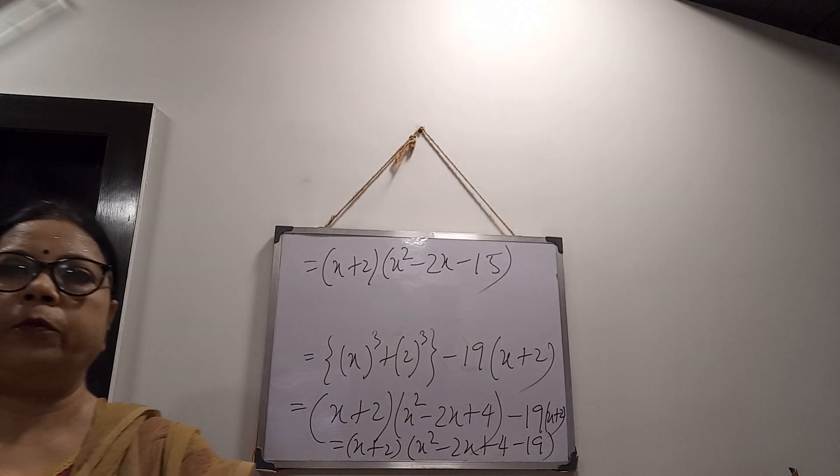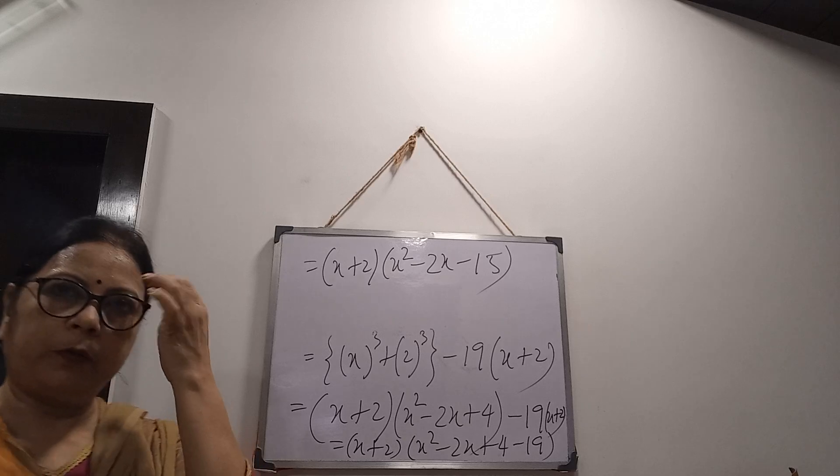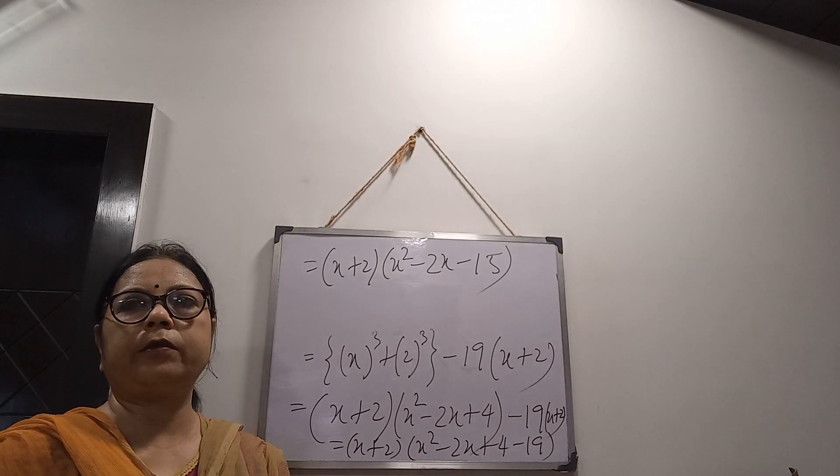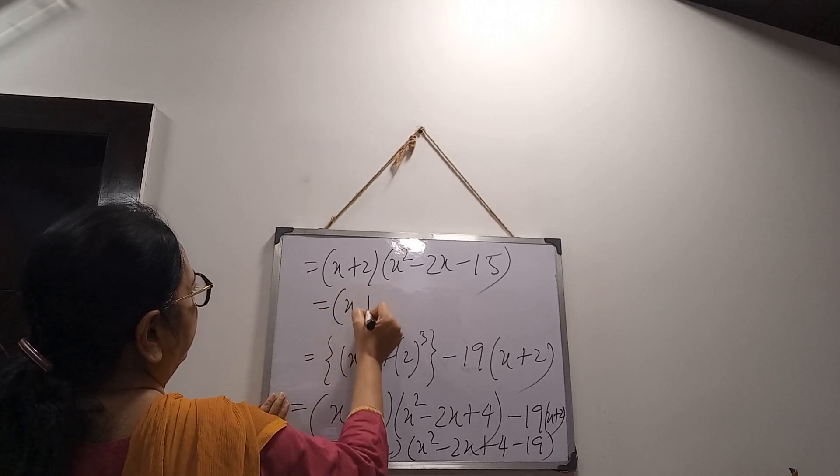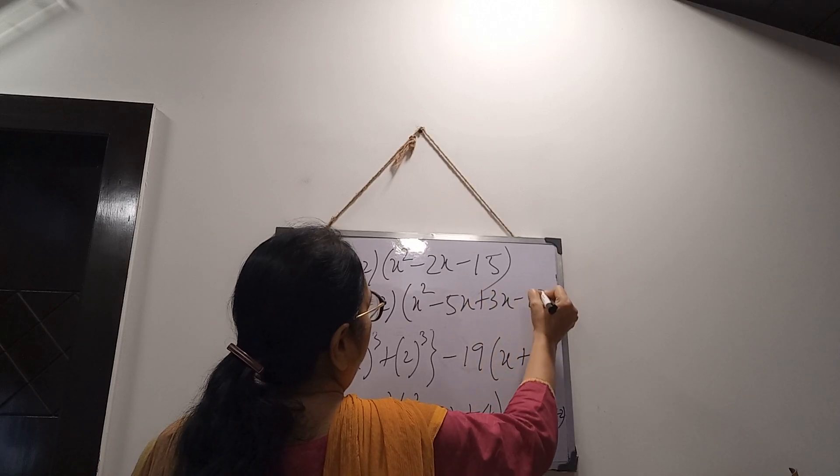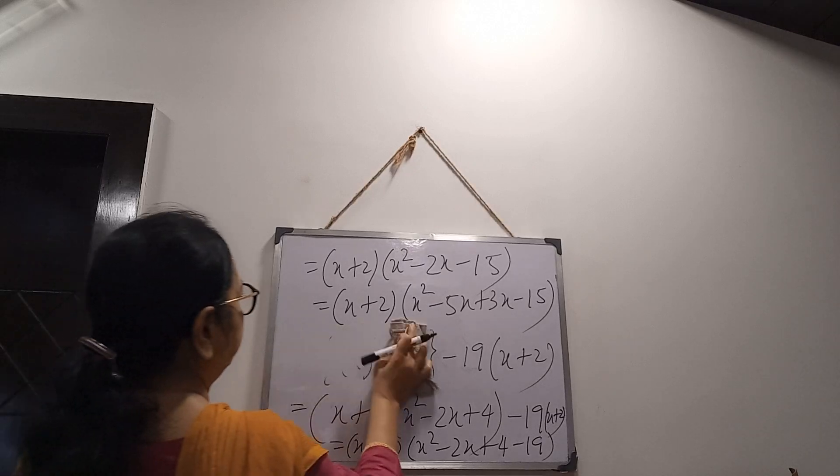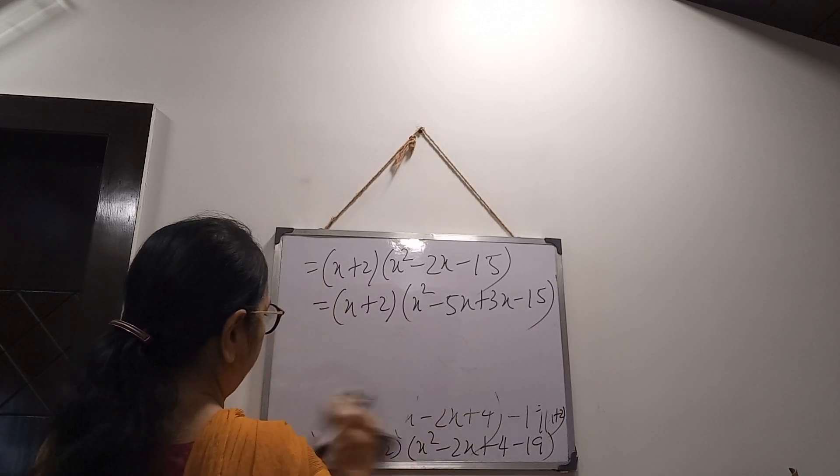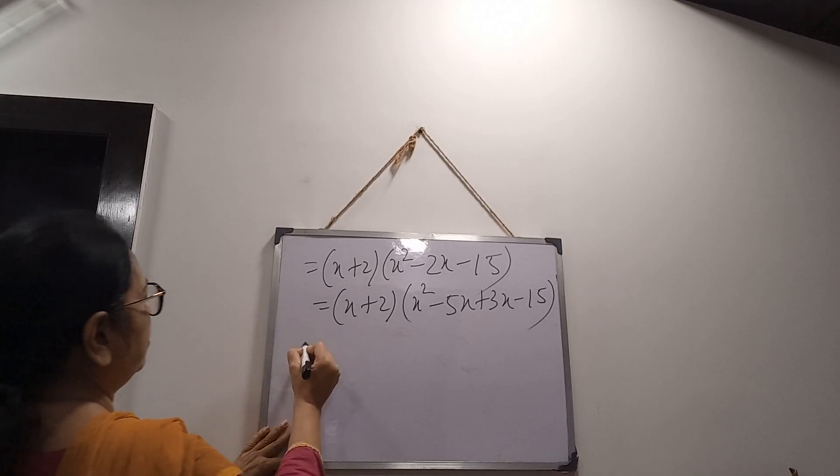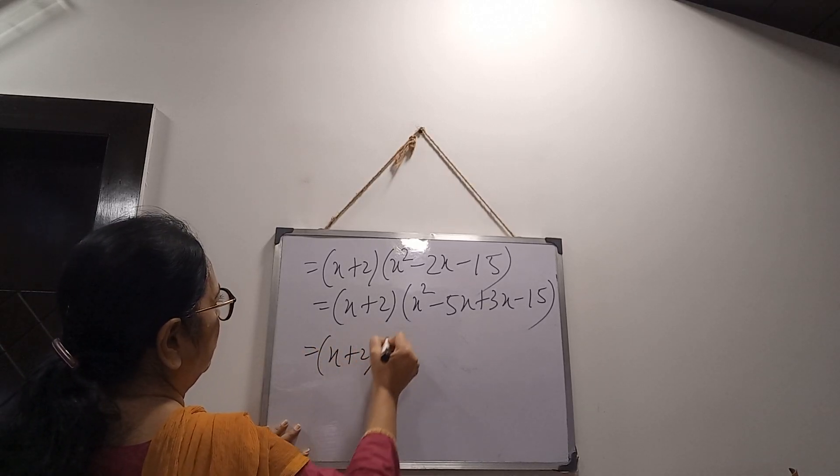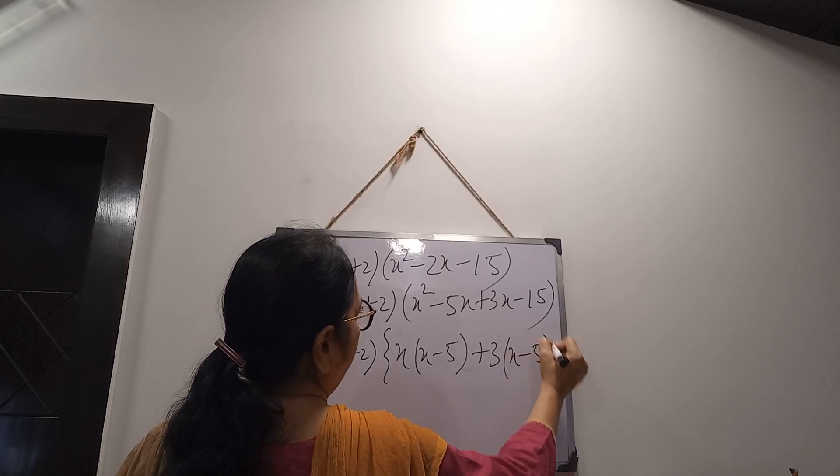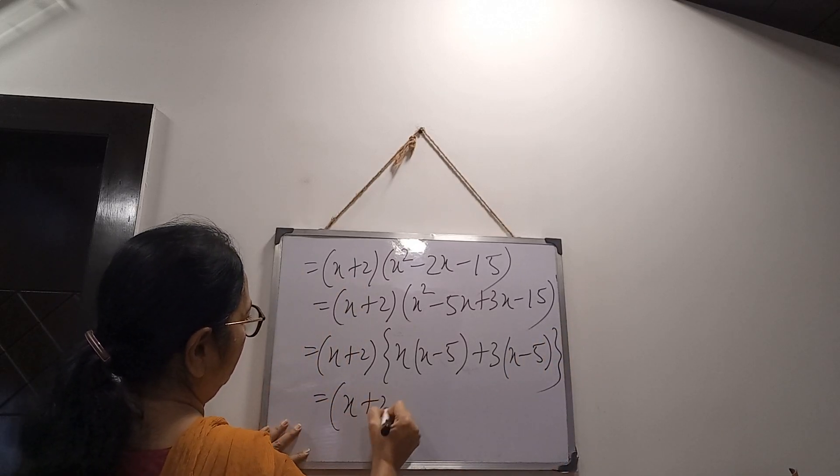What I have told you, that you have to check whether middle term is possible or not. There is 15, you have to bring 2. So 15 means 5 times 3 is 15. I can use that. So here, x + 2 into x² - 5x + 3x - 15. Yes, middle term is possible. Then x common: x - 5, plus 3 common: x - 5. So these are the factors.